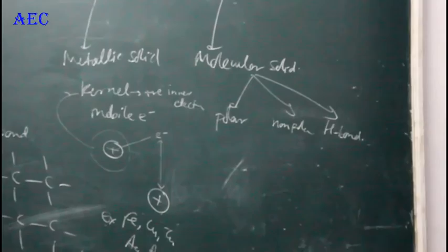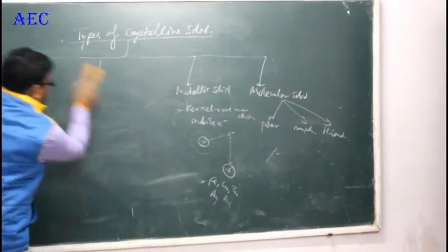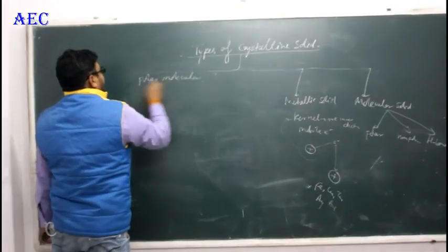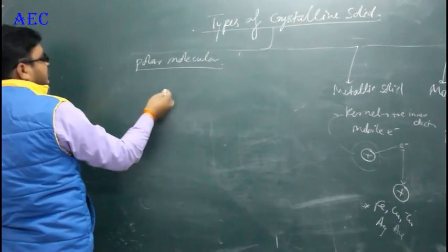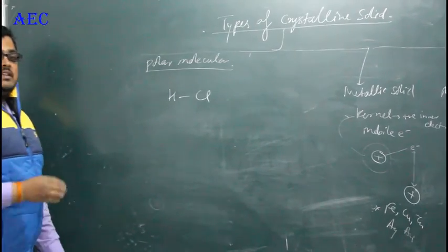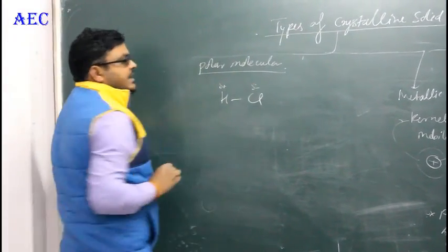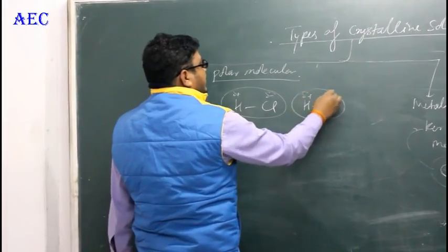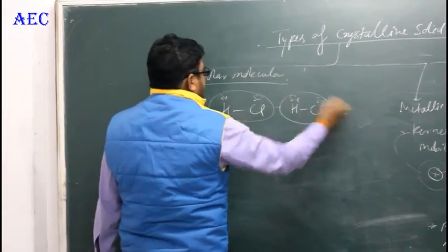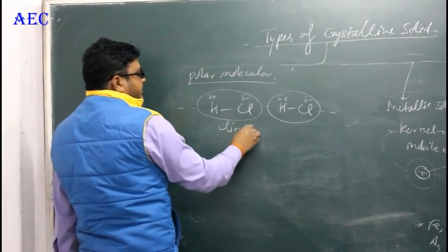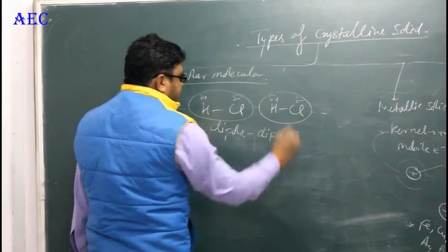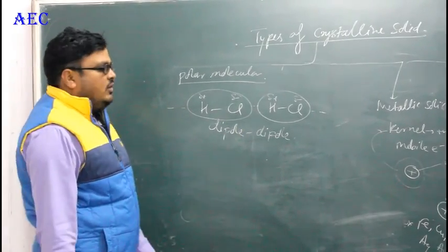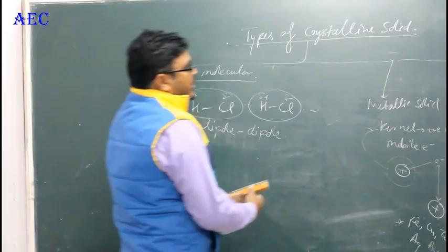In polar molecular solids, polar substances create a dipole — one positive part and one negative part. For example, HCl creates a dipole. When two HCl molecules come close, the inter-molecular force that operates between them is dipole-dipole interaction. This is the first type of molecular solid.